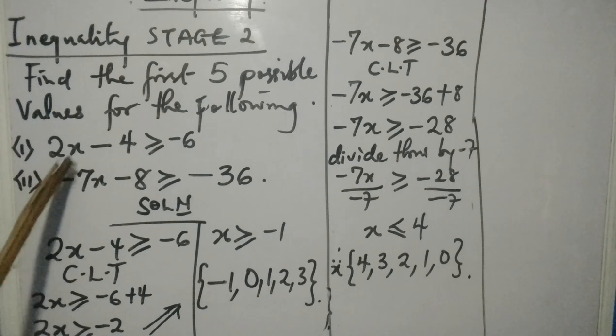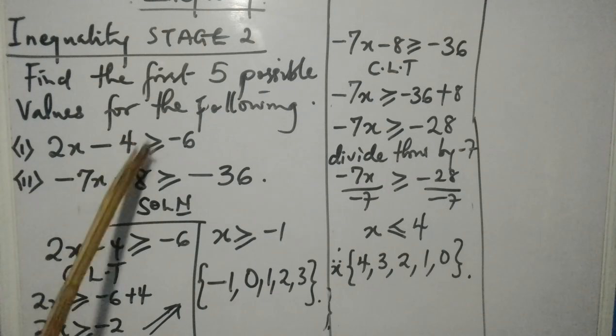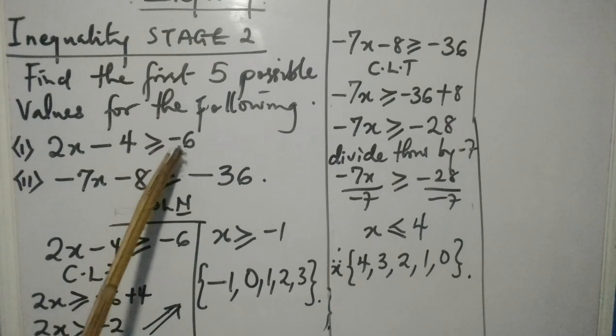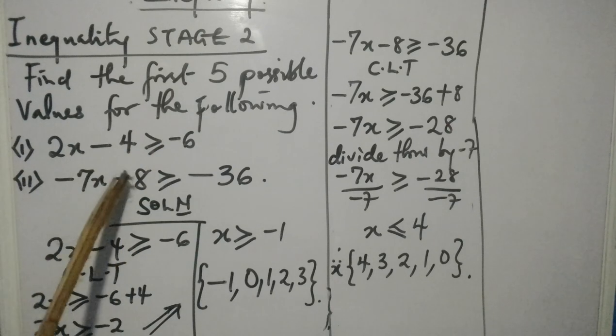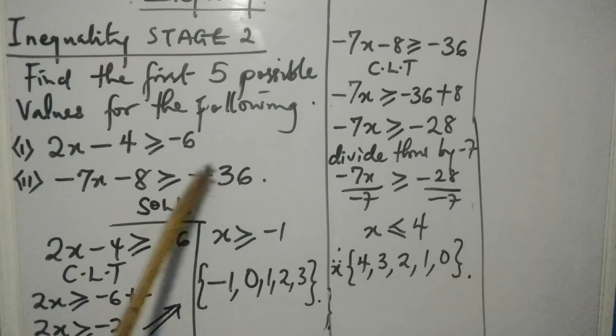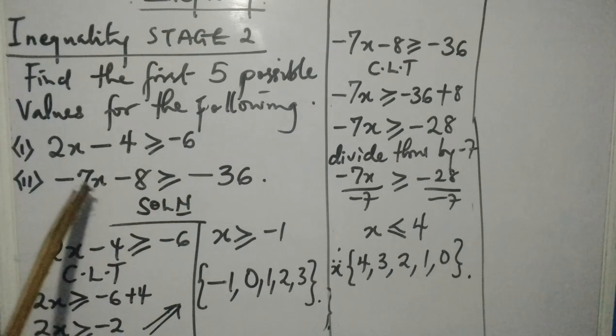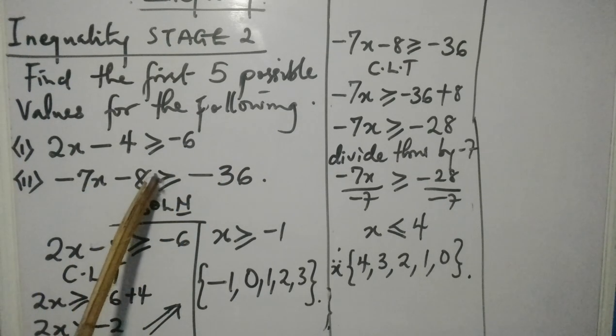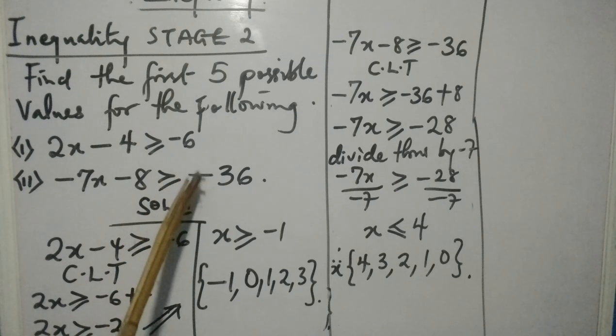So for now you have 2x minus 4 greater than or equal to -6, and -7x minus 8 greater than or equal to -36.